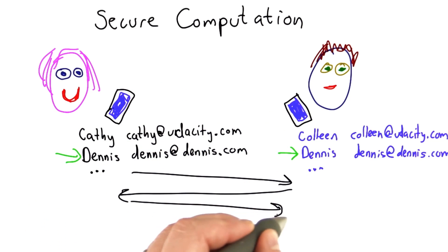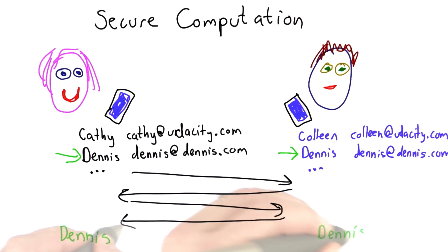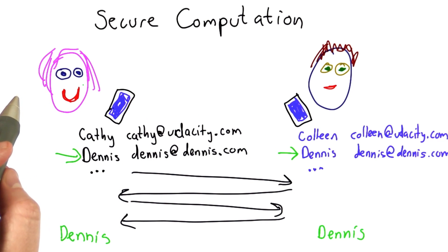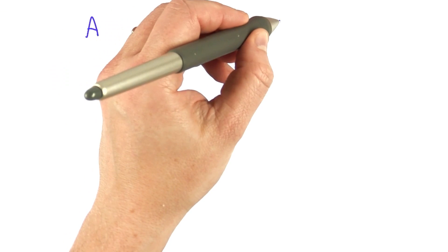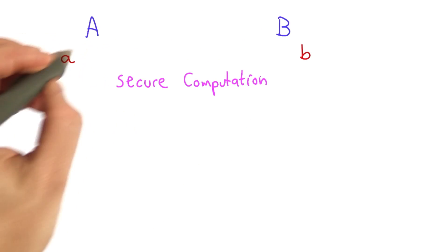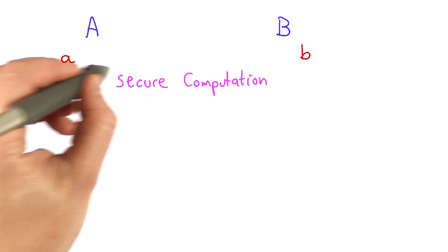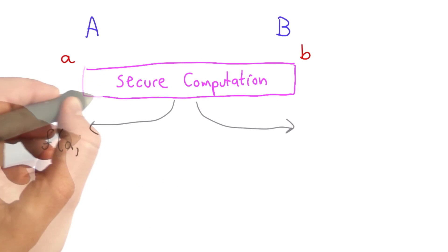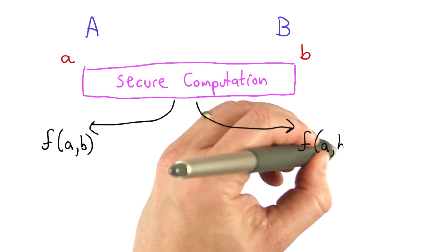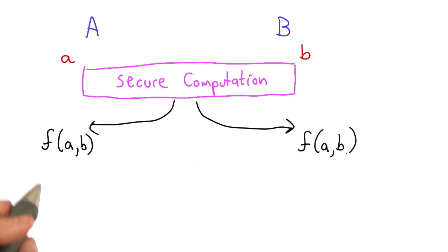They want to do this by executing some protocol, where at the end of the protocol, both parties would know the matching entries, but not learn anything else about the other person's address book. More generally, we have two parties, A and B. They have some private information. They want to perform some secure computation. And at the end of that, they learn the result of some function on both of their inputs, but they don't learn anything about the other party's input.